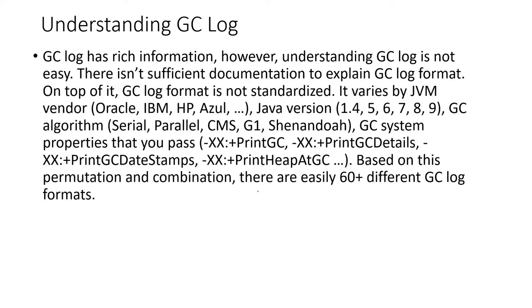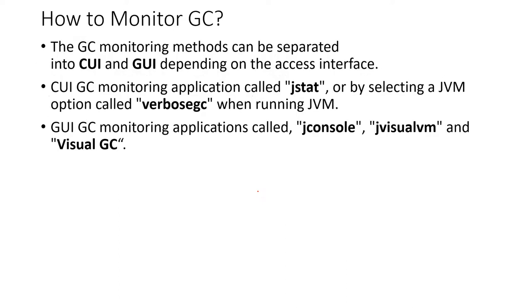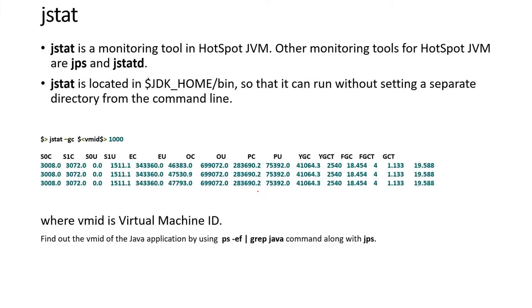Depending on the GC algorithm you are using, there are really 60+ formats for GC logs. It's good to understand what type of algorithm you are using first, and then read your GC log file, because different combinations give different types of information. We saw two methods to monitor a GC — CLI (command-line interface) using commands like jstat, jconsole, and GUI tools like J Visual VM. We also saw how J Visual VM shows the different phases of the heap and different phases of the GC cycle.